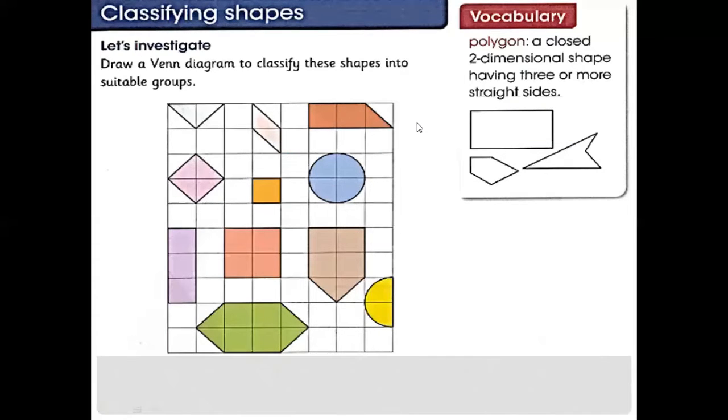Before we start, you must know what is a polygon. It's a two-dimensional shape. If you have three or more straight lines, there is no curve, so these things are called polygons.